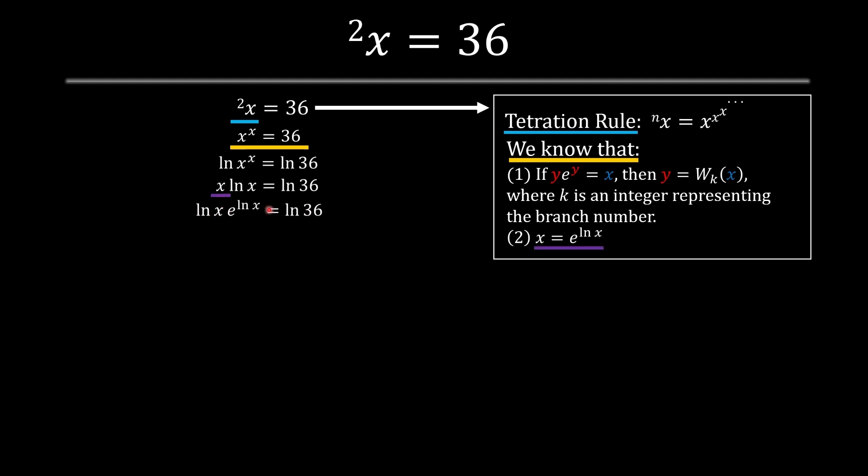Now, this looks very familiar. It looks like this. So we can apply a Lambert W function. We apply a Lambert W on both sides. It's going to simplify to just a singular y, which is our ln of x in this scenario. And now we have a W.